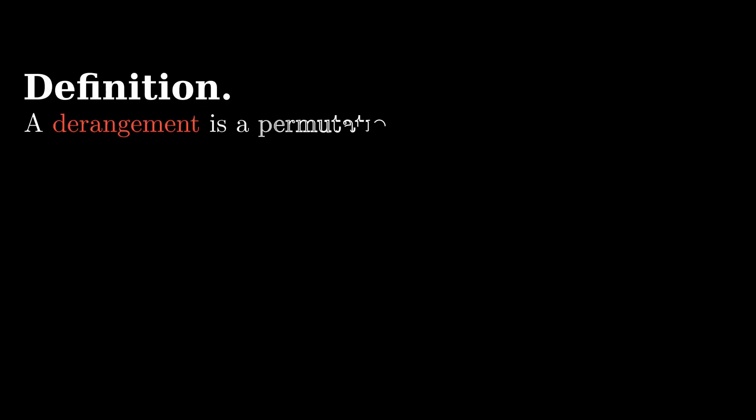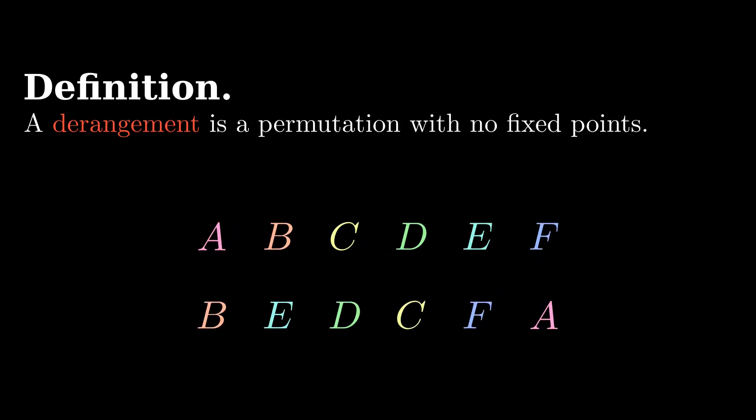A derangement is a permutation with no fixed points. In our running example, that's a situation where no student gets their own homework back.